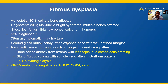The majority of cases of fibrous dysplasia has activating mutations in the alpha subunit of GNAS. Fibrous dysplasia is negative for MDM2 and CDK4, which is important in the differential diagnosis of low-grade central or well-differentiated intramedullary osteosarcoma. Fibrous dysplasia is also negative for keratin, with a differential diagnosis of osteofibrous dysplasia.